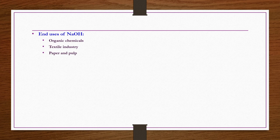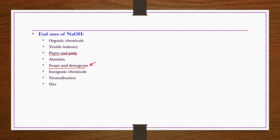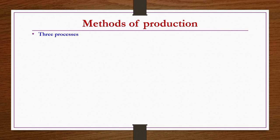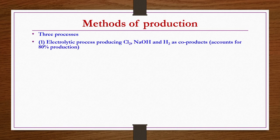End uses of NaOH include organic chemicals, textile industries, paper and pulp, alumina, soaps and detergents, inorganic chemicals, neutralization, dye industries, pharmaceuticals, demineralization, petrochemicals, oil drilling, and minerals and metals extraction. NaOH has become a very common chemical because of its many applications. Regarding methods of production, there are three different types. The first is the electrolytic process producing chlorine, sodium hydroxide and hydrogen as co-products, which accounts for 80 percent of production. This can use diaphragm electrolytic cells, mercury cells, or membrane cells.